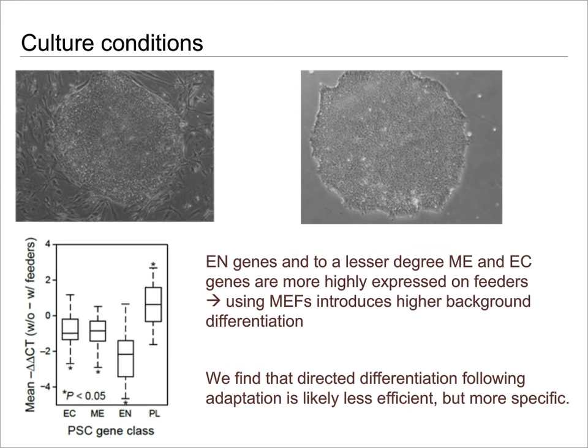We frequently grow our cells either on feeder cells or in feeder-free conditions. If you compare these conditions, which generally don't cause dramatic differences within the cells, you can actually see a very subtle change in the expression of endoderm and, to some lesser degree, mesoderm and ectoderm genes — they tend to be more highly expressed when cells are grown in feeders. This suggests that growing cells on feeder cells may induce higher levels of background differentiation, which we're picking up using the signatures of the three embryonic germ layers. When using directed differentiation following adaptation to feeder-free conditions, the differentiation is slightly less efficient, but in fact more specific — so you get more targeted differentiation to your desired cell type.